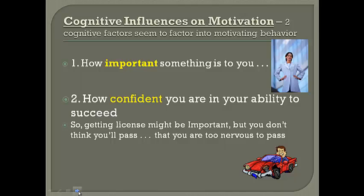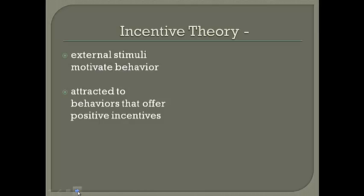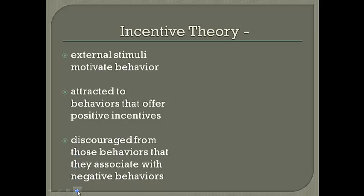Now we're going to take a look at a couple of specific theories. The first is called the incentive theory, which relates closely to our unit on operant conditioning and reinforcers, especially secondary reinforcers. The incentive theory basically maintains that there are external stimuli that maintain or drive our behavior — factors out in our environment. Some of those incentives are based on our attraction to behaviors that offer positive incentives. There are also behaviors we might be discouraged from because they are associated with negative outcomes.